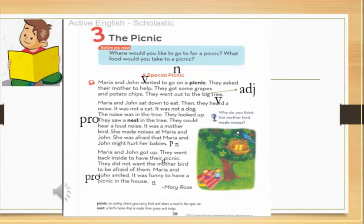They went out to the big tree. Big is an adjective. What's the meaning of adjective? Sifa. Adjective means sifa. Okay. Now I will ask you a question about paragraph one. Where did Maria and Joan go for a picnic? Where did Maria and Joan go for a picnic?